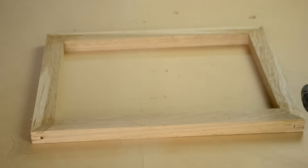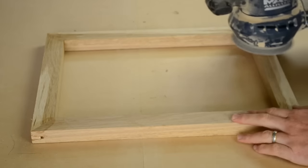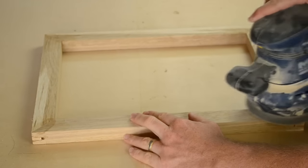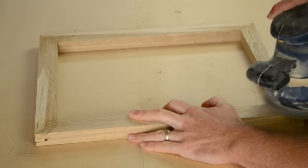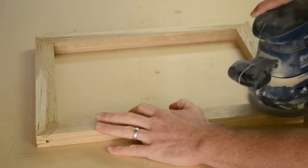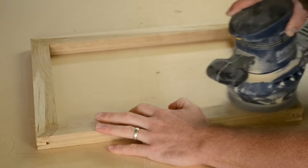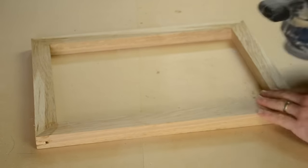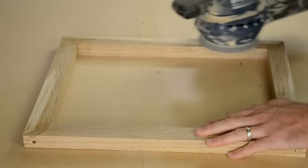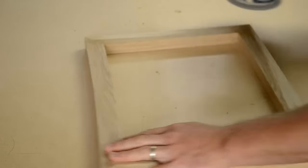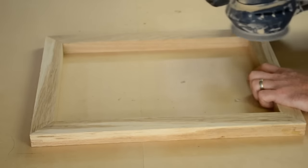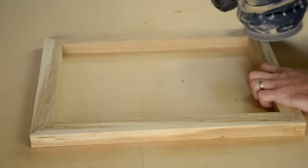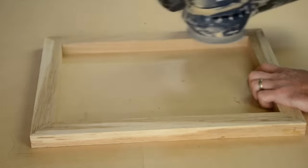Trimmed off pretty close just with a handsaw and then got the random orbital sander out just to smooth off the corners and the joins because it had got a bit rough. And I just smoothed down where I'd cut off with the saw the little splines so they're nice and flush.